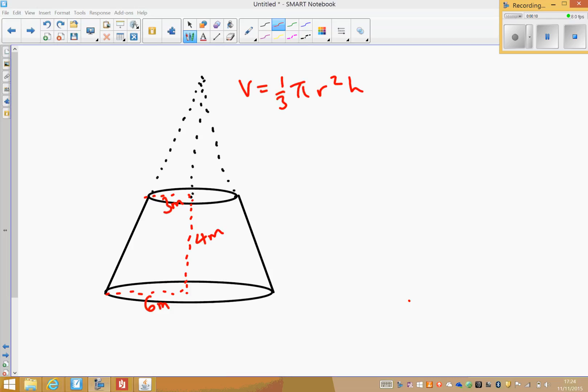Now the solid shape here is called a frustrum, it's kind of like a cone with a top chopped off.